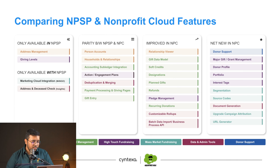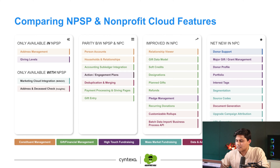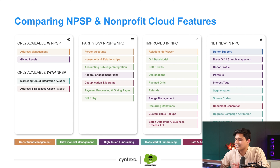Let's look at the feature breakdown. Features only available in NPSP include address management, giving levels, Marketing Cloud integration, and address and deceased checks. Features at parity between NPSP and Nonprofit Cloud include person accounts, household and relationships, accounting subledger, action and engagement plans, deduplication and merging, payment processing, giving pages, and gift entry. Features improved in Nonprofit Cloud over NPSP include relationship viewer, gift data model, soft credits, designations, planned gifts, refunds, pledge management, recurring donations, customizable rollups, batch data import, business process API, and more.